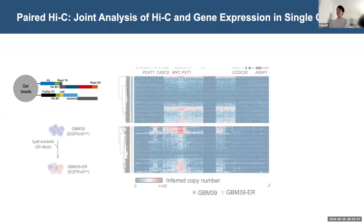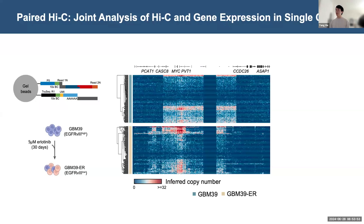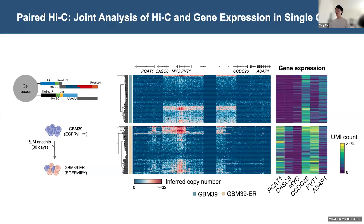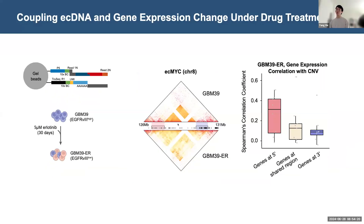With Paired Hi-C, we revisited the GBM-39 system to study the ecDNA structure before and after treatment. Now, besides the chromatin structure, we can also compare the difference in expression levels of genes on ecDNA. For example, the inclusion of PCAT1 onto the ecDNA after treatment is correlated with elevation in RNA levels. We also note that although all these genes reside on ecDNA, the expression level is not constantly very high. By classifying ecDNA genes into three different groups based on their position on the ecDNA, we show that all these genes respond differently even when they are all on the highly amplified ecDNA.